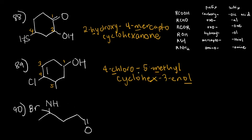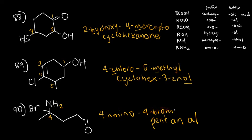For example 90, we have bromine — halogens are always low priority and not principal groups — an amino group, and an aldehyde. Between an amine and an aldehyde, the aldehyde wins by a large margin, so we use the suffix -al. We count 1, 2, 3, 4, 5 carbons — that's pent — with no carbon-carbon double bond, so pentanal. We do not need to put a locant for the aldehyde because it is always at carbon 1. At carbon 4 we have both amino and bromo, and we write them in alphabetical order: 4-amino, 4-bromo. The full name is 4-amino-4-bromopentan-1-al.